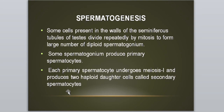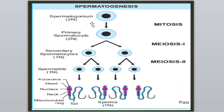Recap: کچھ mother cells ہوتے ہیں seminiferous tubules of testes کے اندر جو mitosis کے ذریعے divide ہوتے ہیں اور diploid spermatogonium بناتے ہیں۔ ہر spermatogonium primary spermatocyte بناتا ہے، پھر primary spermatocyte meiosis one کی stage سے گزرتا ہے تو two haploid daughter cells یعنی secondary spermatocytes بنتے ہیں۔ پھر وہ meiosis two سے گزرتے ہیں اور ہر secondary spermatocyte سے دو spermatids بنتے ہیں۔